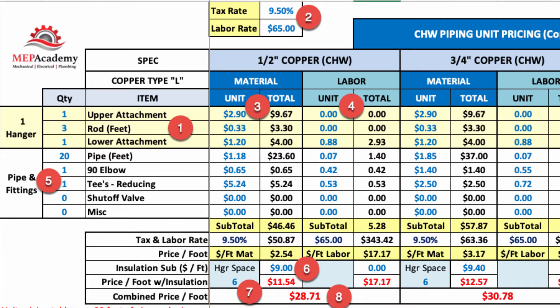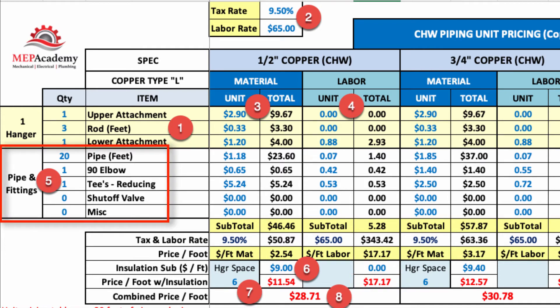All of that put in will give you your cost per linear foot installed, because you have your material unit and your labor unit. If you look at number five, you put how many feet of pipe and then the fittings you're expected to see — in this example, 20 feet. So this has 20 feet of pipe, one 90, and one reducing T. For every 20 feet, that's what you expect to see. Once you put all these units in, the calculation divides the total by 20 to come up with the cost per linear foot.